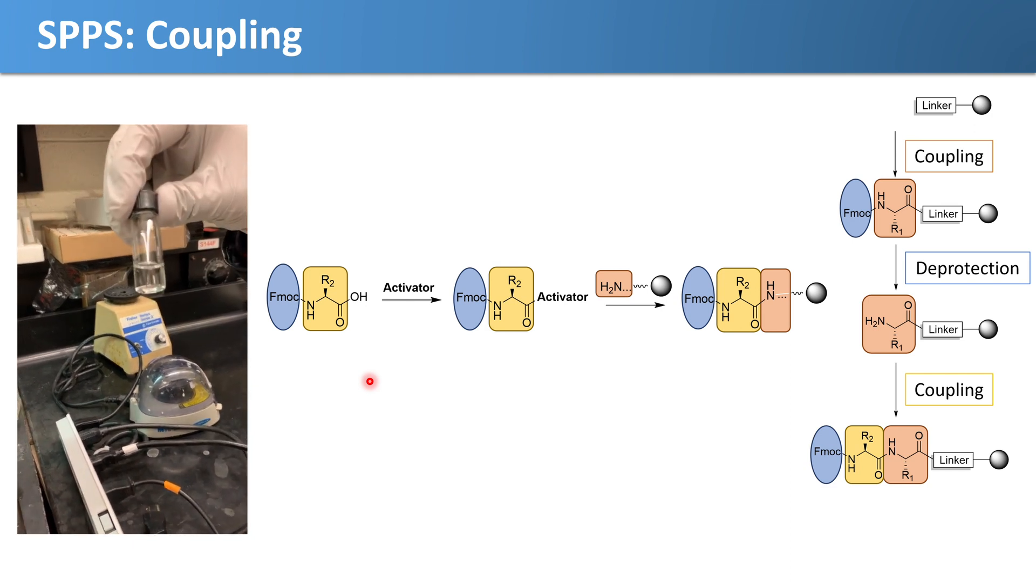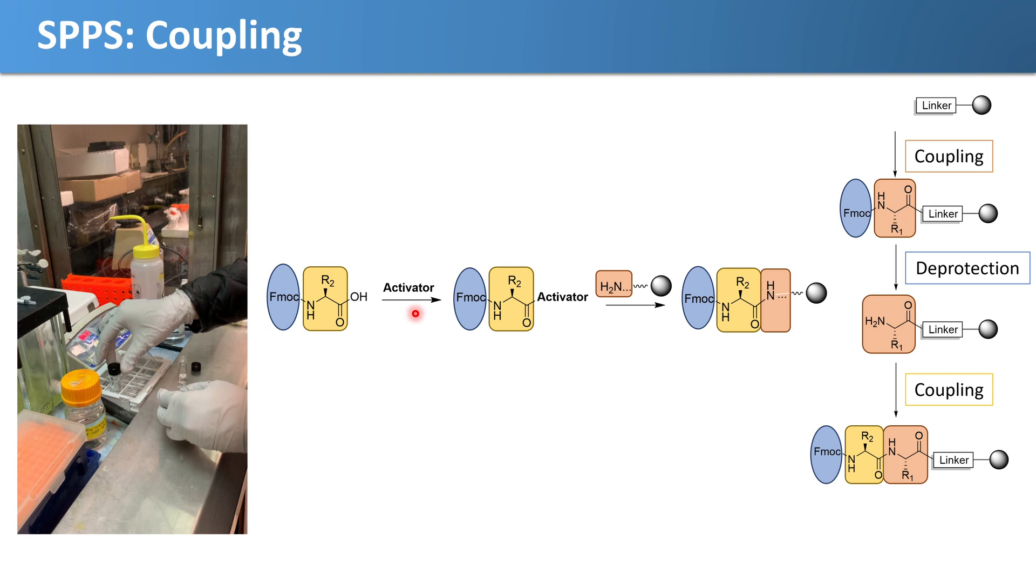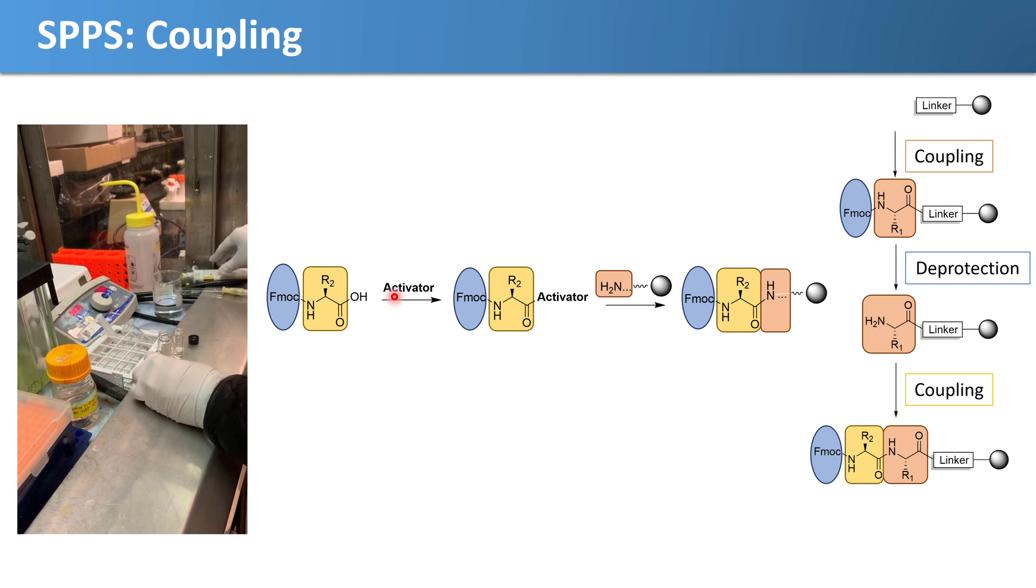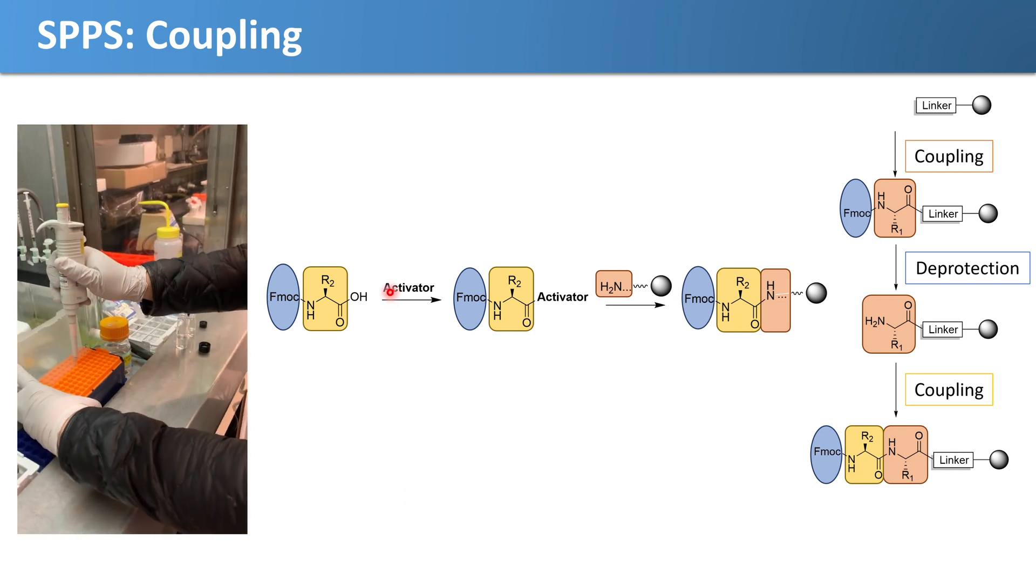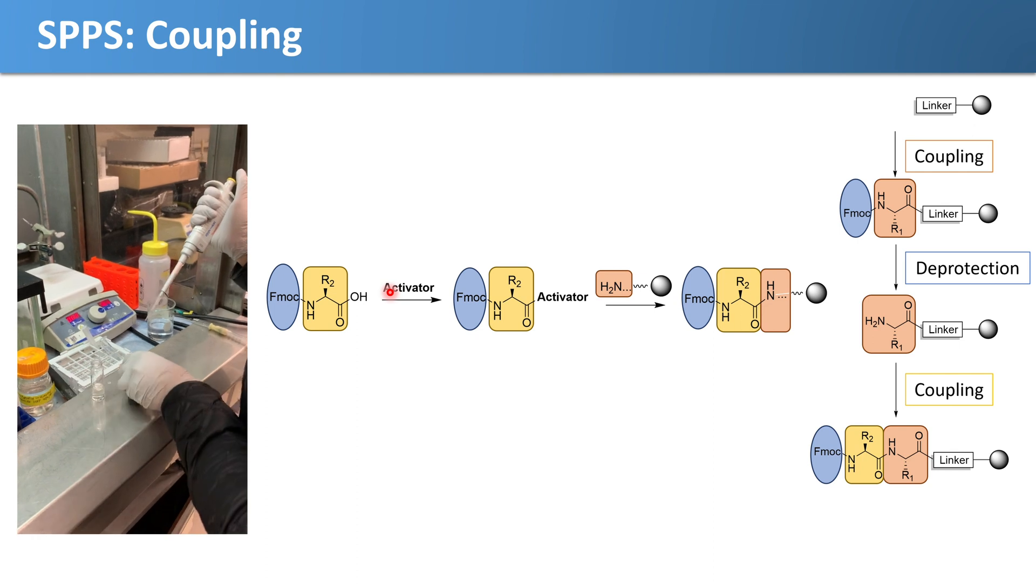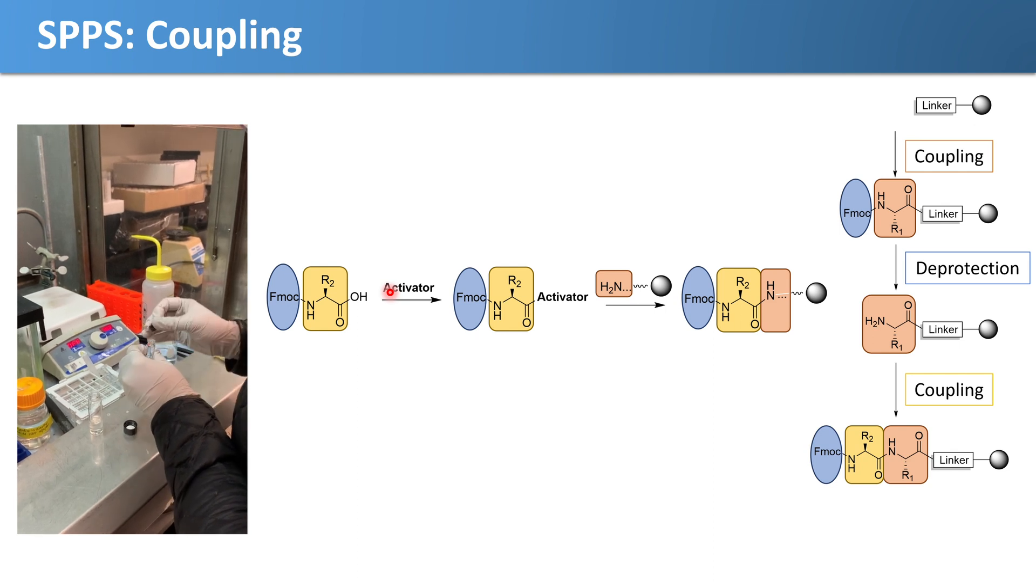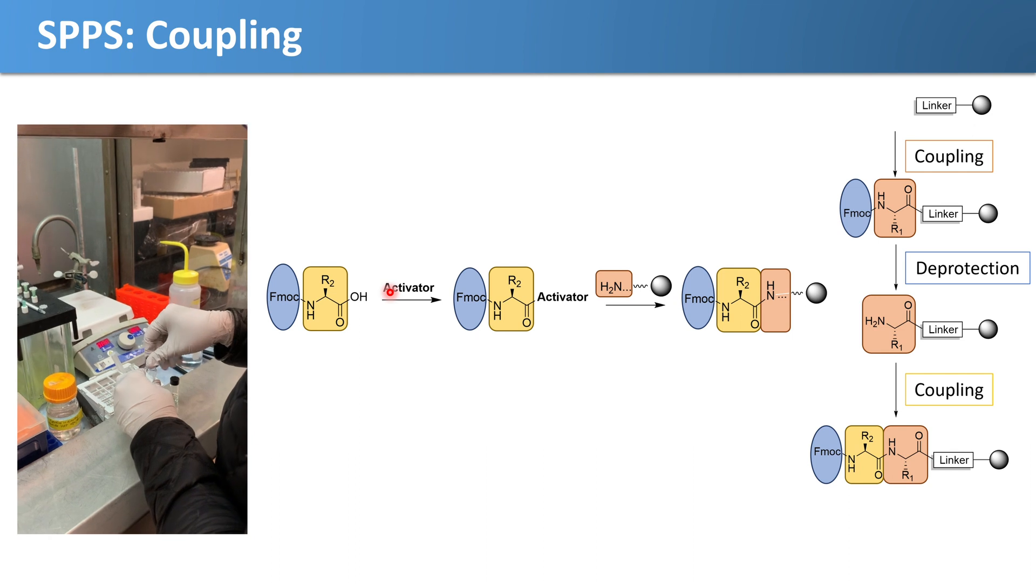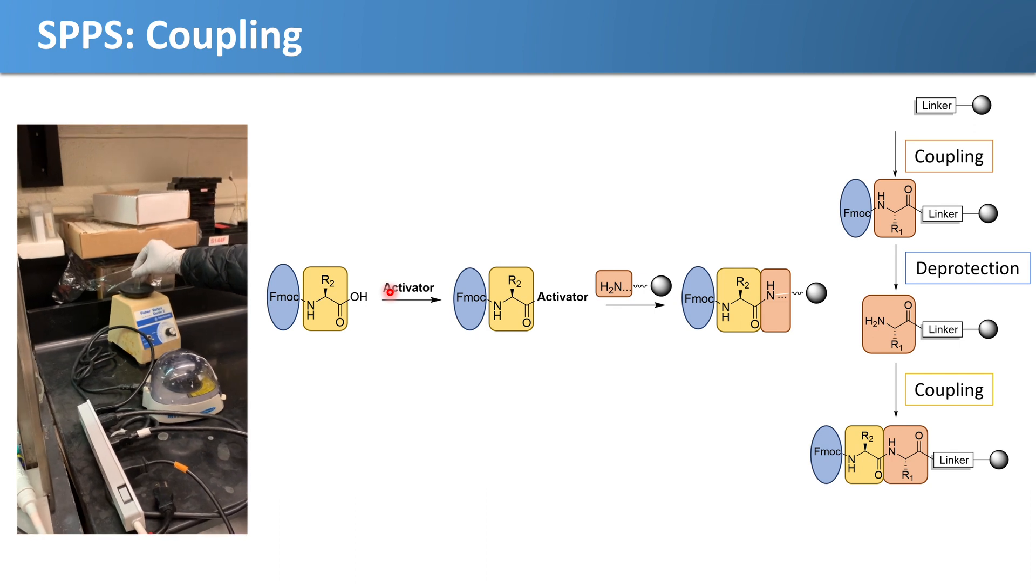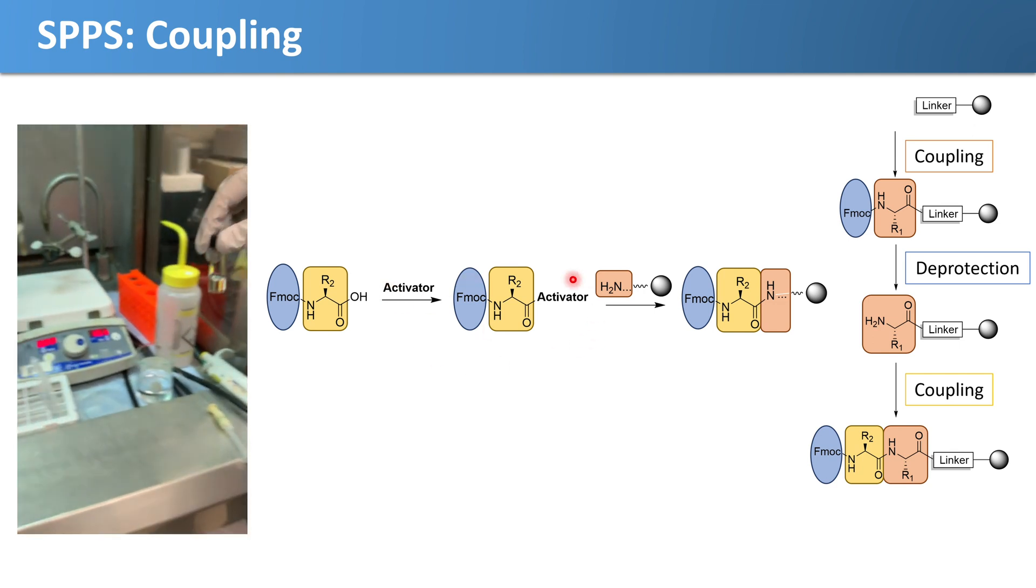The solution is clear, which is because the two have not reacted yet. In order to promote this reaction, we have to add a base. This base is di-P. Then she will mix the two to react. Now you can see it has this faint yellow color, which corresponds to the activated amino acid.